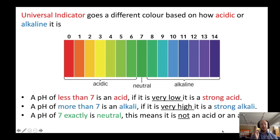If something has a pH of less than 7, it is an acid, and if it is very low, it is a strong acid. A pH of more than 7 is an alkali, and if it's very high, it is a strong alkali. If something is exactly 7, then we consider this to be neutral — it is not an acid, nor is it an alkali.